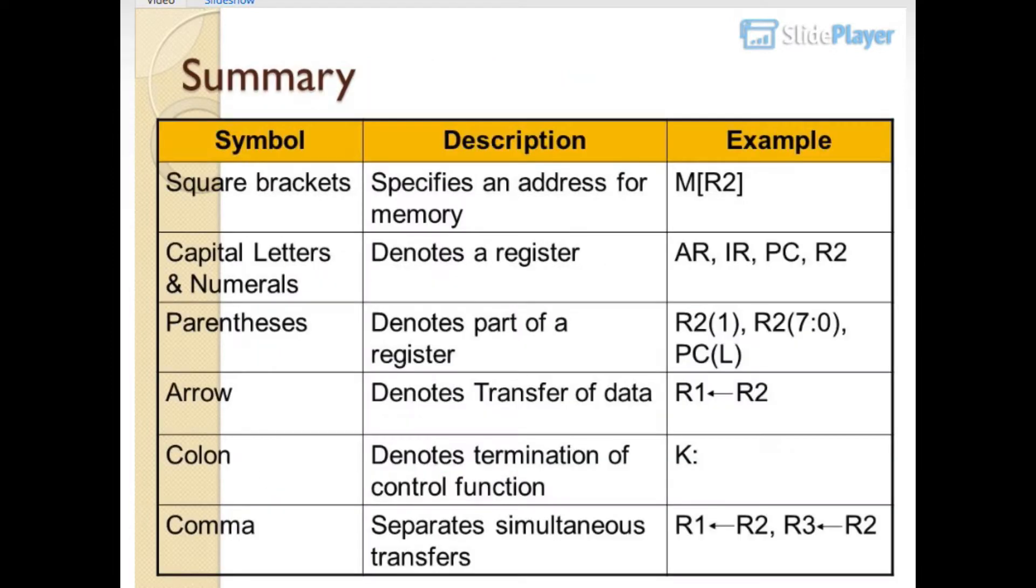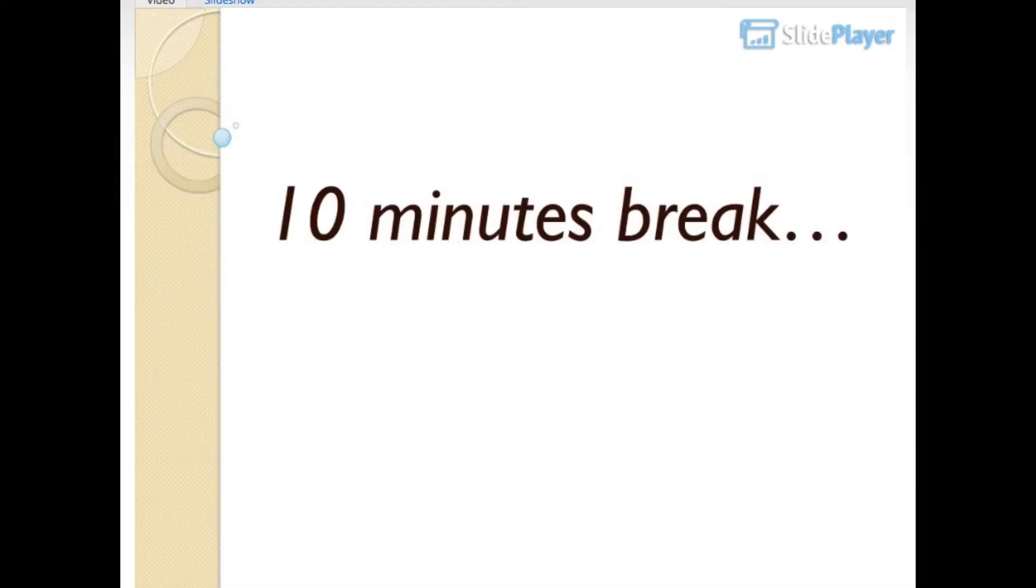Summary of symbols: Square brackets specify an address for memory like M[R2]. Capital letters and numerals denote a register like R, IR, PC, R2. Parentheses denote part of a register like R2(1) or R2(7:0) or PCL. Arrow denotes transfer of data like R1 gets R2. Colon denotes termination of control function. Comma separates simultaneous transfers like R1 gets R2, R3 gets R4.